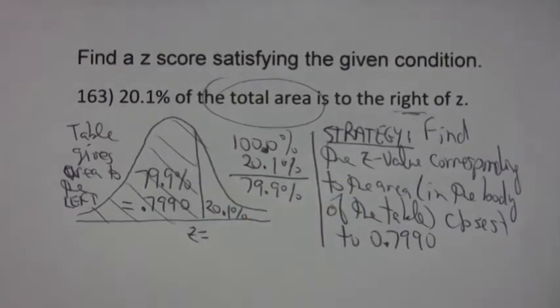So I'm going to go in and I'm going to search the table and try to find the value, the z value, that comes closest to 0.7990. Okay, let's do that.